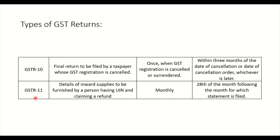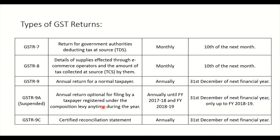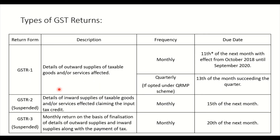GSTR-11 covers all inward supplies furnished by a person having a Unique Identification Number (UIN) and claiming a refund. It is a monthly return due on 28th of the month following the month for which the statement is filed — for example, for the month of June, the last date is 28th July. This complete table of GSTR-1 through GSTR-11 is a potential 15-mark question; you can write this table and get full marks.